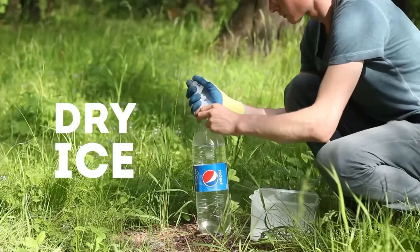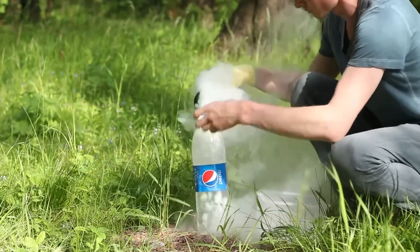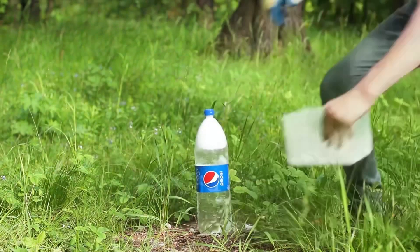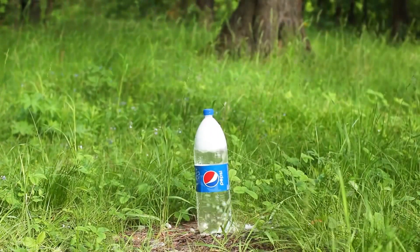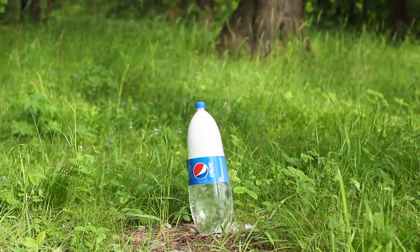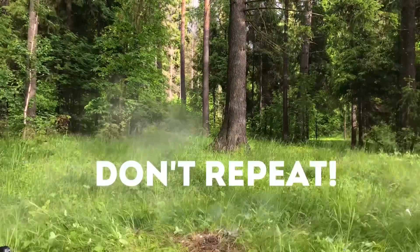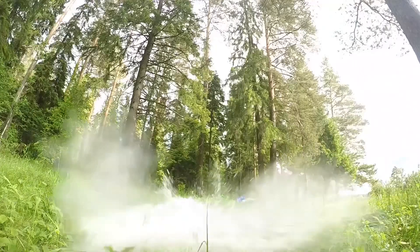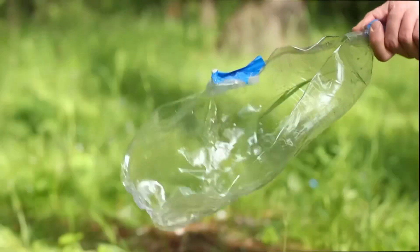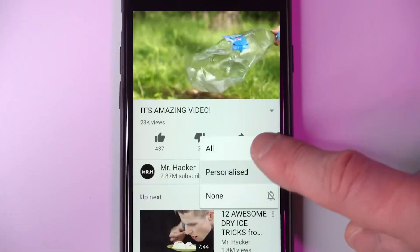For the next experiment, we will pour dry ice into a bottle of water. It immediately begins to evaporate and we need to tighten the cork on the bottom. As soon as it is twisted, we urgently move away to a safe distance. The bottle was torn apart by a powerful explosion. Never repeat it yourself. It's better to subscribe to our channel and click on the bell.